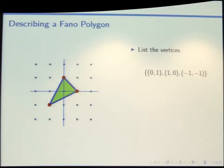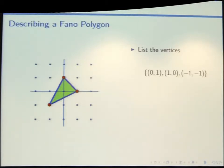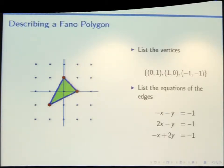If you didn't like listing points and it made you really angry to write down points, but you wanted to tell someone else how to make this polygon, you could force them to tell you all the equations of the lines. When you've written all the lines that give you the edges of this triangle, you could just color in the inside — the bounded piece. There are lots of ways to write the equation of a line.